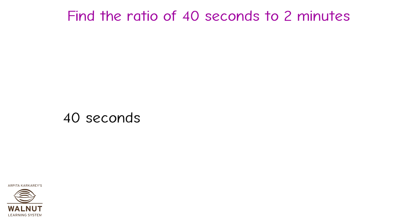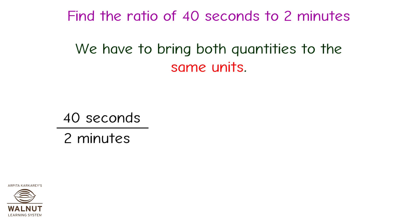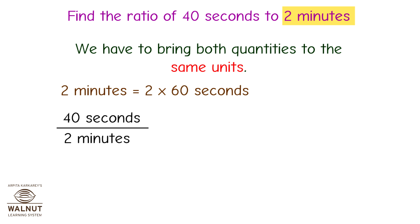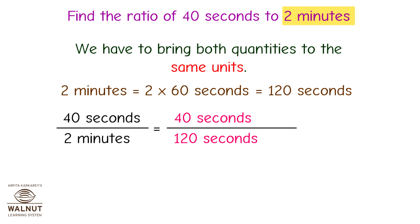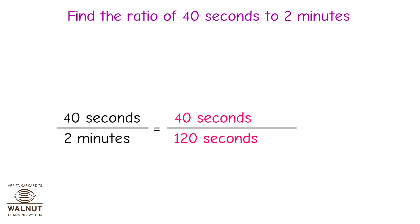Find the ratio of 40 seconds to 2 minutes. Both quantities are of the same kind, but their units are different. We have to bring both quantities to the same units. Here, we convert the minutes into seconds: 2 minutes is equal to 2 multiplied by 60 seconds, equal to 120 seconds. Now the units are the same, so we can find the ratio. We write it as a fraction: 40 seconds upon 120 seconds.